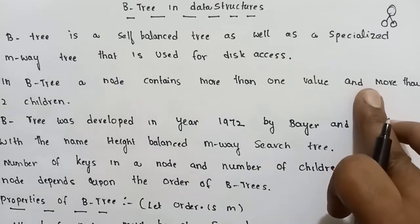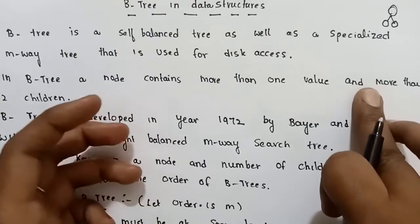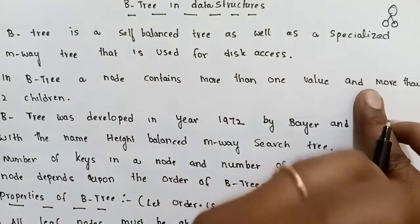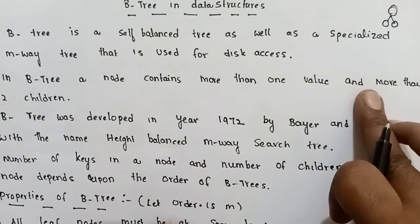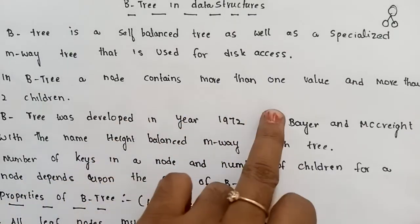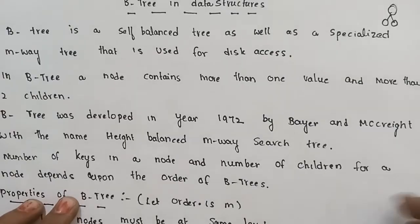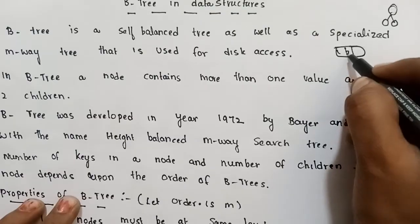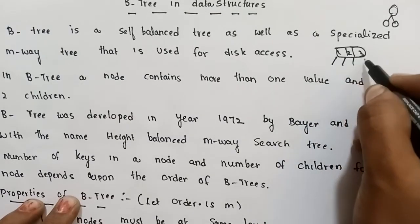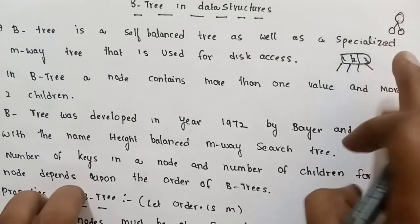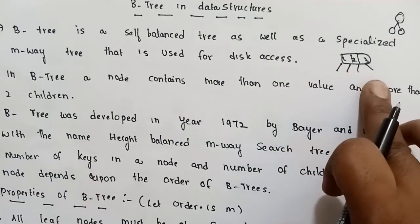This data is stored in secondary memory, like disk storage. That disk data is stored in the form of blocks. Blocks are accessed using the B-tree. A B-tree node contains more than 1 value and more than 2 children. Suppose you have 1 node in a B-tree — there are more than 1 value and more than 2 children.